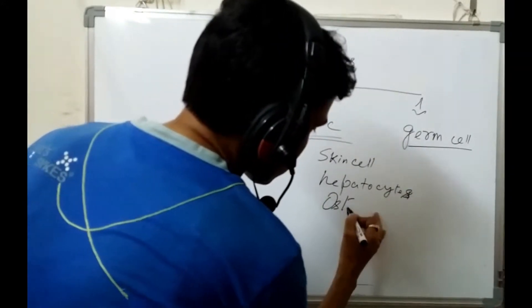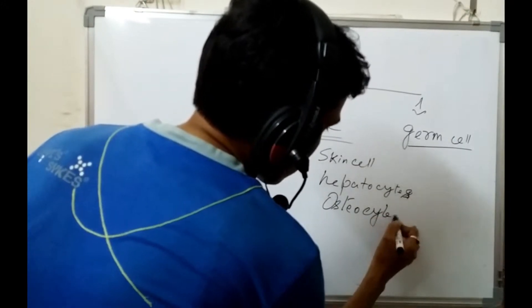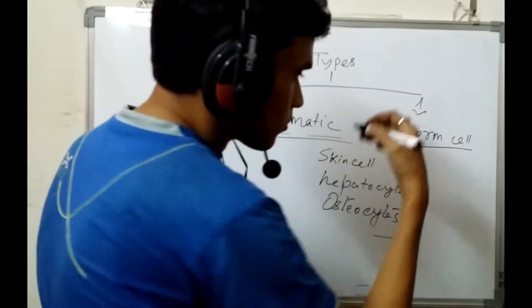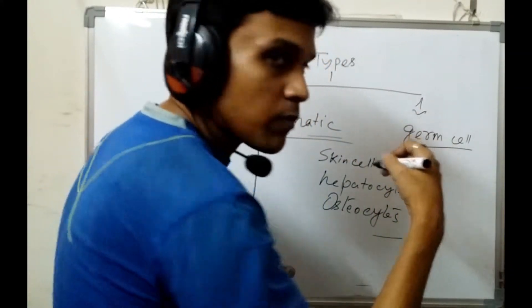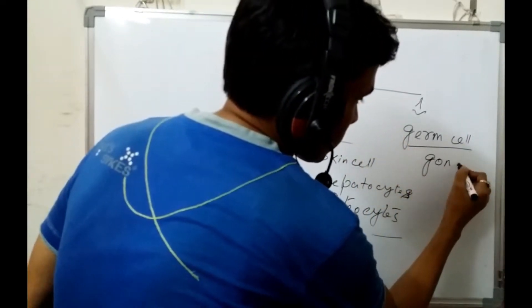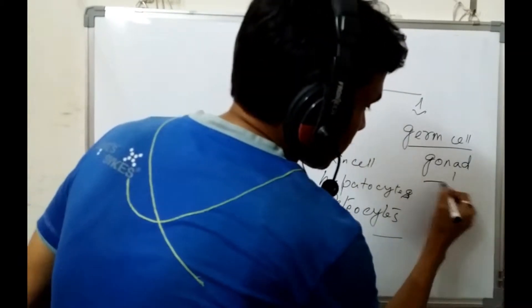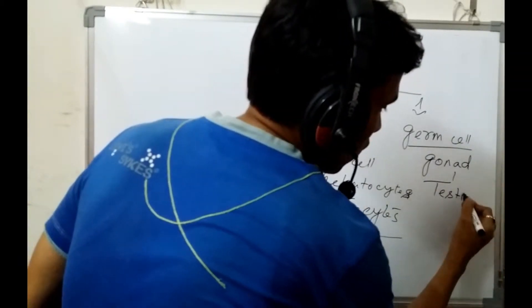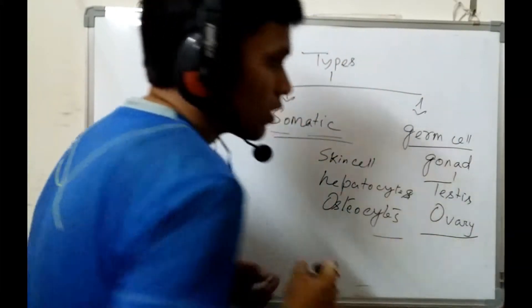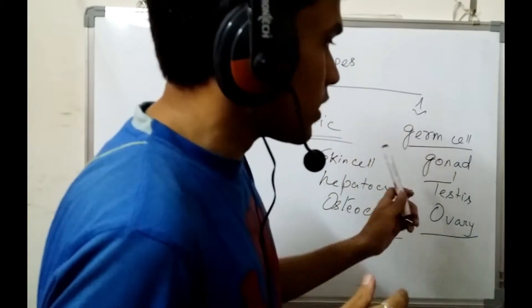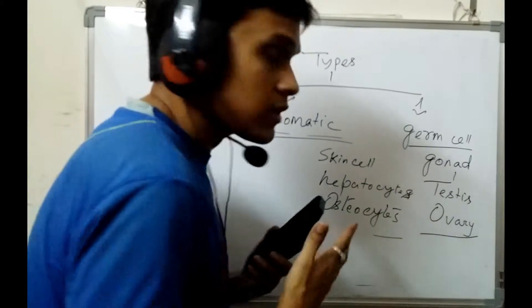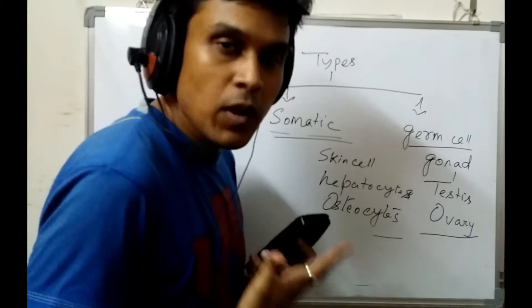Germ cells are actually primordial germ cells. The location of the primordial germ cells is in the gonads — the gonad is the testes for males and the ovary for females. So germ cells are present in testes and ovaries.